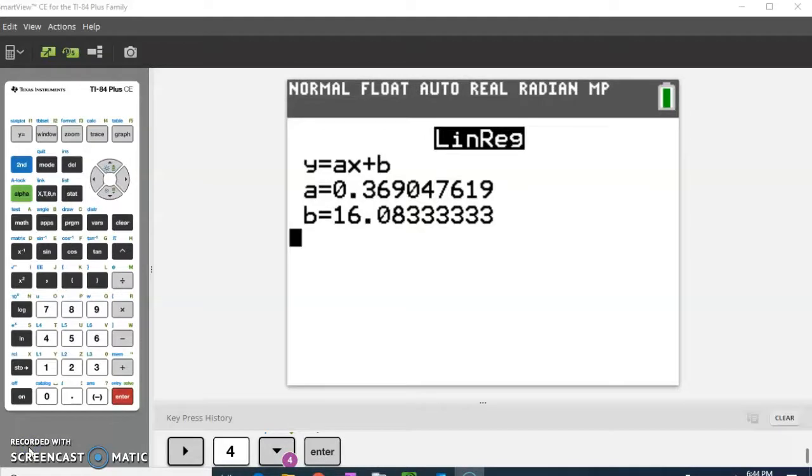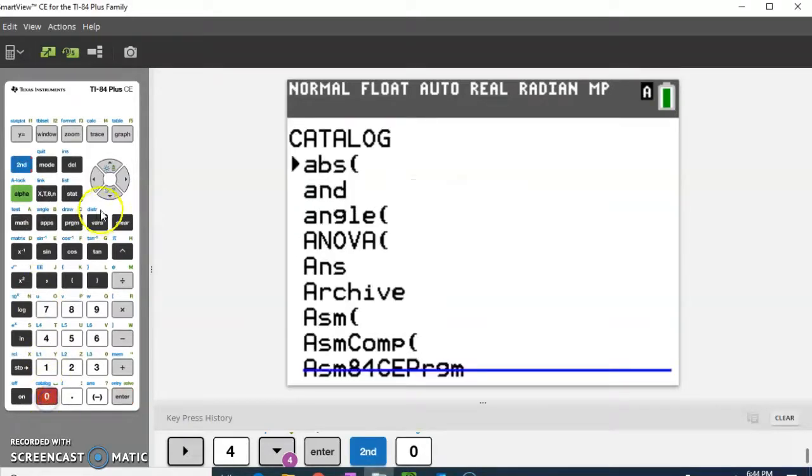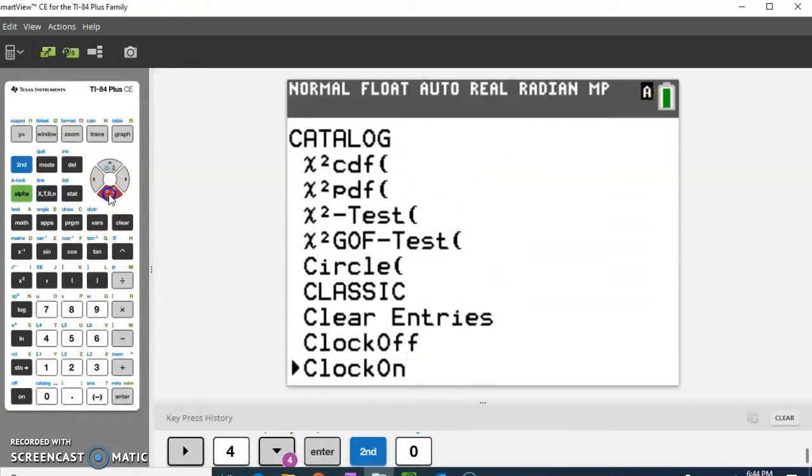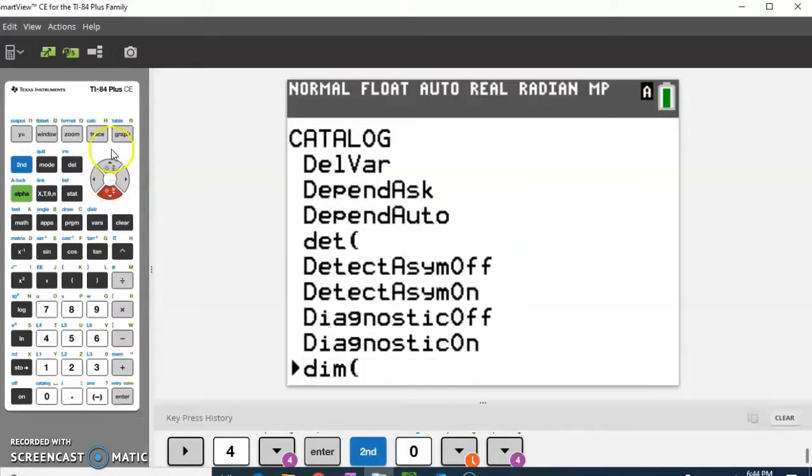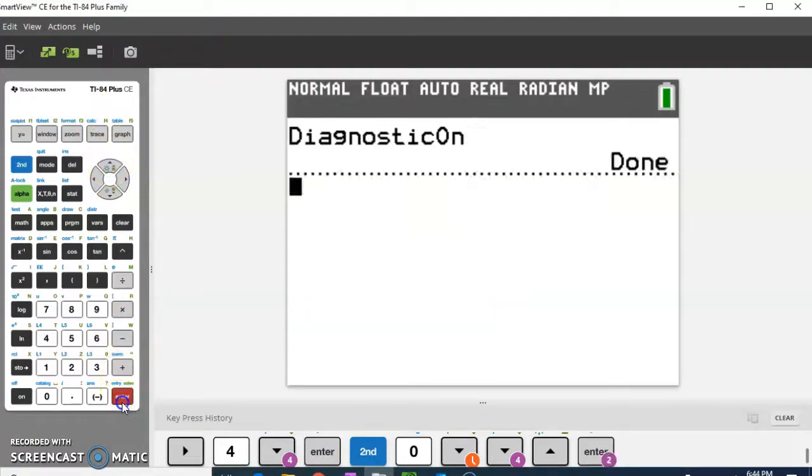Is the linear model appropriate? Why or why not? All right. I need to answer the question if the linear model is appropriate, which means I need a correlation coefficient. So once again, if you're not, if you don't have the R value there, you're going to want to go to second catalog, and you're going to scroll to where it says diagnostics on. I'll do this a couple of times because it is something that people forget. So let's put the diagnostics on, and once I do that,